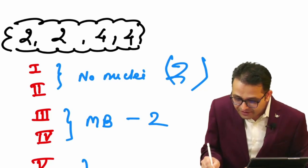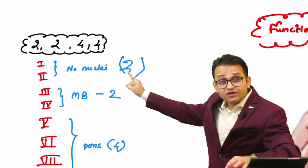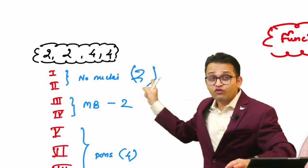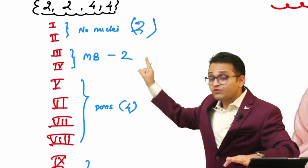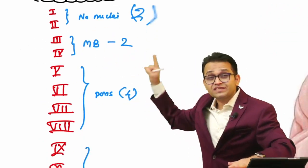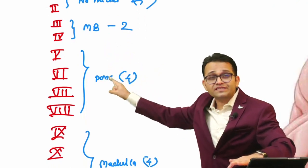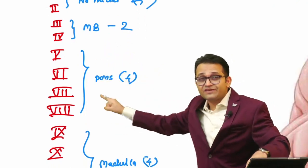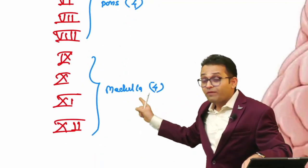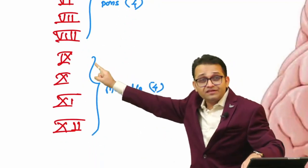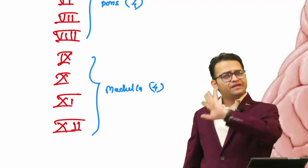So what you have to remember: first two cranial nerves - no nucleus. Next two cranial nerves - midbrain nucleus. Next four nuclei - they are located in our pons: five, six, seven, eight. While the medulla has the ninth, tenth, eleventh, twelfth cranial nerves. The formula is two, two, four, four.